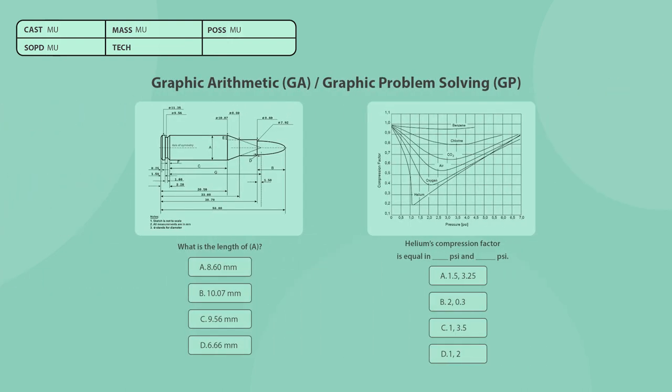Graphic arithmetic questions, also named graphic problem solving, measure your ability to interpret, calculate, and deduce from visual data. These range from floor plans and shop drawings to bar graphs, depending on the test. This section appears in the CAST and the TECH in different names.